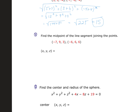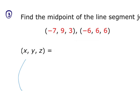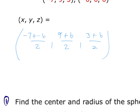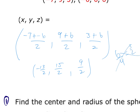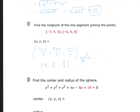For the midpoint: add the x's and divide by 2, add the y's and divide by 2, add the z's and divide by 2. So (−7 + (−6))/2 = −13/2, (9 + 6)/2 = 15/2, and (3 + 6)/2 = 9/2. Show your work — don't do it in your head. Only simplify if possible; for example, 6/4 simplifies to 3/2.